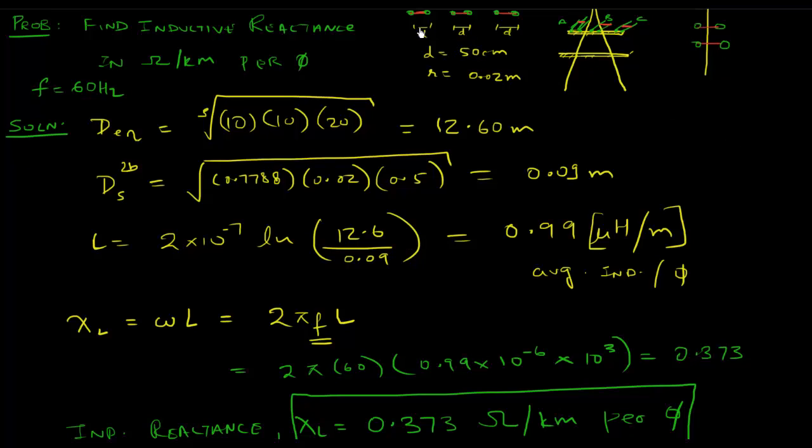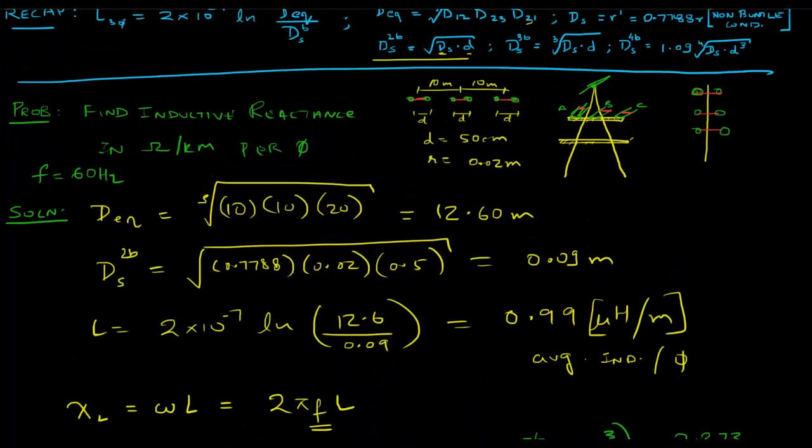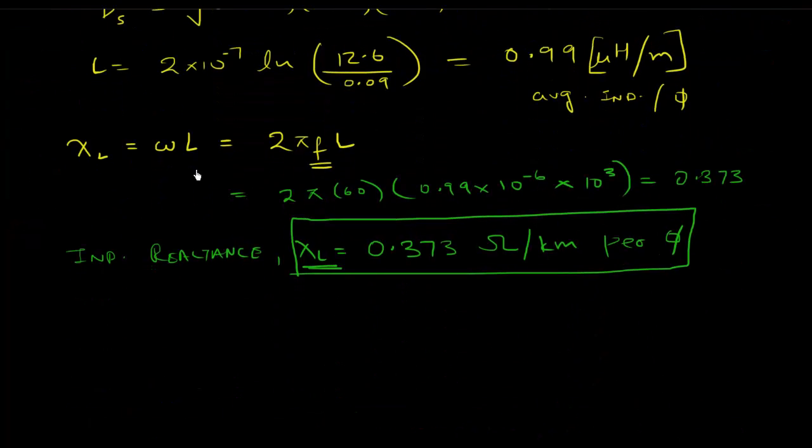Let us now, as I said, solve this using the two bundle situation. Let's just imagine it wasn't a two bundle case, it was just single conductors. Let's say it was single conductor, same distances apart. This is 10 meters, this is 10 meters. This d goes away because there's no distance between the bundles, and r was still 0.02 meters. What would the L and the XL values be in that case?